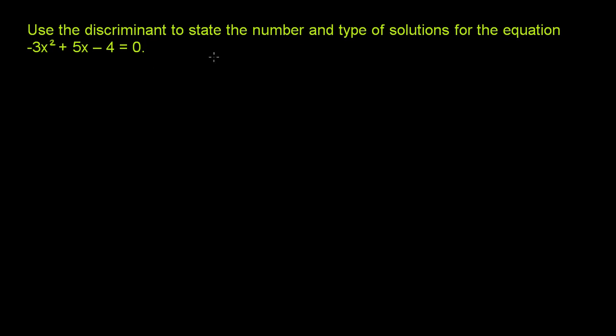Use the discriminant to state the number and type of solutions for the equation -3x² + 5x - 4 = 0.